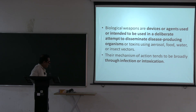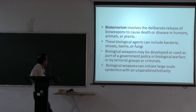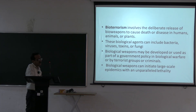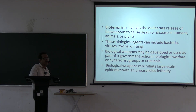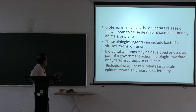Agents can also be spread by insect vectors. Broadly, transmission occurs through infection or intoxication. Biological agents can be bacterial, viral, fungal, or toxins from plants — all of these can serve as biological weapons.